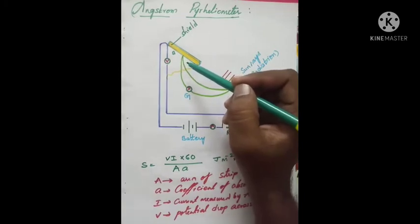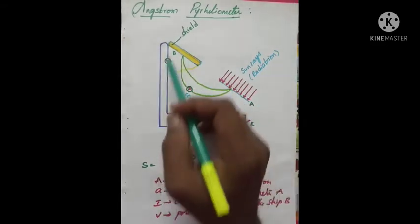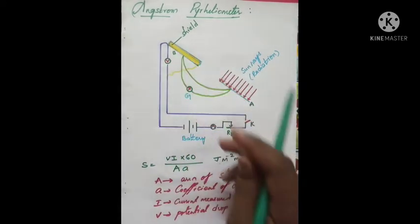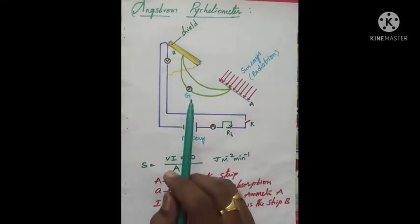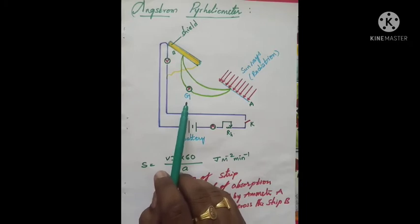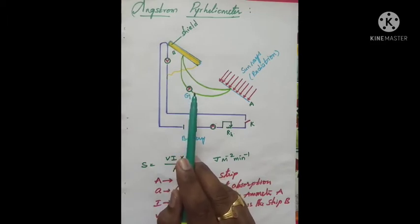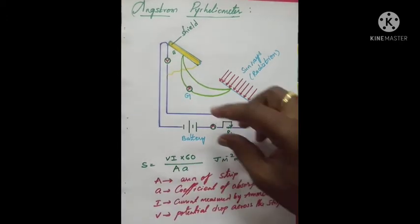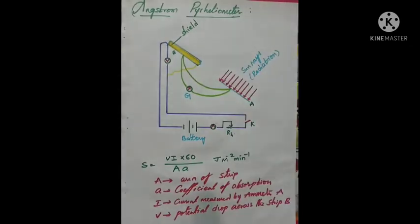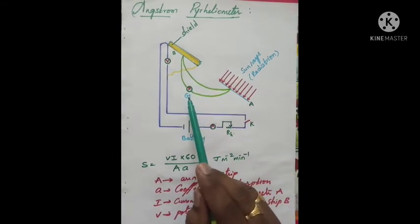The strength of current through strip B is adjusted using the rheostat. By rotating the rheostat, we increase the current until the galvanometer deflection is nullified — that is, reduced to zero. This zero deflection is achieved by carefully adjusting the current with the rheostat.